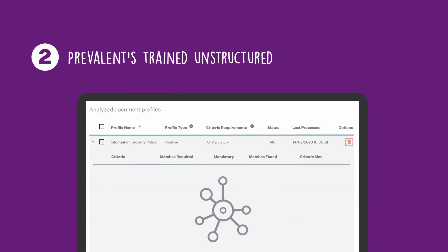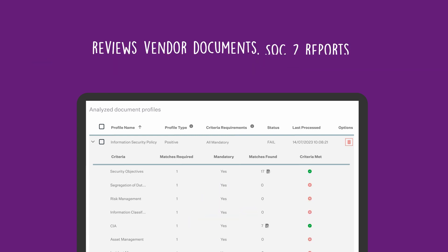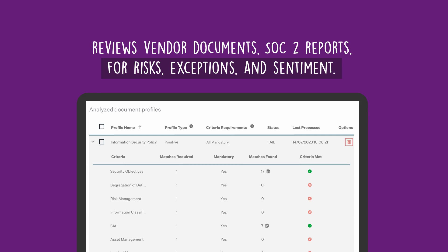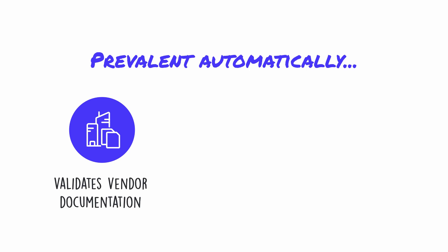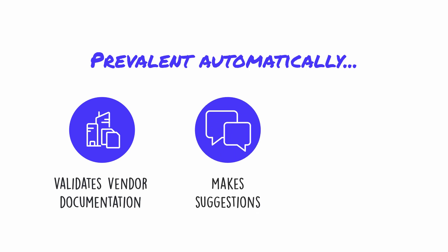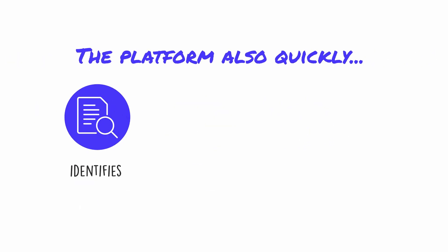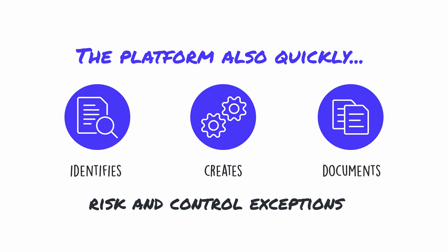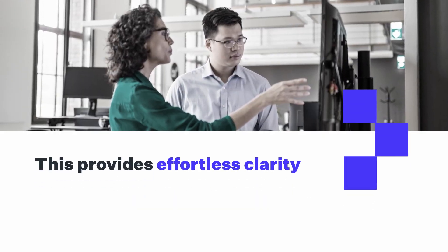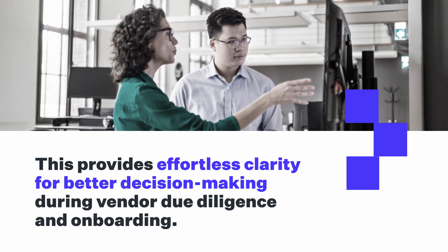Next, Prevalent's trained unstructured deep analytics model reviews vendor documents, such as SOC 2 reports, for risks, exceptions, and sentiment. Prevalent automatically validates the suitability of vendor documentation, makes suggestions, and reveals risks. The platform also quickly identifies, creates, and documents risk and control exceptions. This provides effortless clarity for better decision-making during vendor due diligence and onboarding.